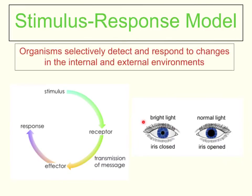When the light becomes brighter, the iris closes and the pupil becomes smaller. That's because the eye is actually trying to control how much light it allows in. In normal light, it needs to open up and allow a bit more light in. In bright light, it closes and doesn't need to let as much light in. That process happens using the Stimulus Response Model.